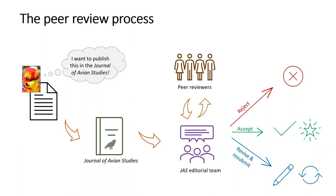Let's say Dr. Firebird's submission makes it through the first step and is sent to peer reviewers. Reviewers are given a period of time to review the submission, write comments and feedback, and provide a recommendation: reject it, accept it, or revise and resubmit for reconsideration. Those reviewers' recommendations and feedback are typically intended to inform the editorial team's ultimate decision. Here we have a second decision point where the editorial team considers the assessments of the peer reviewers as well as their own assessment and makes a decision on Dr. Firebird's submission.